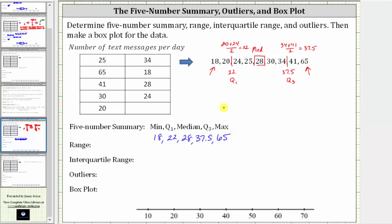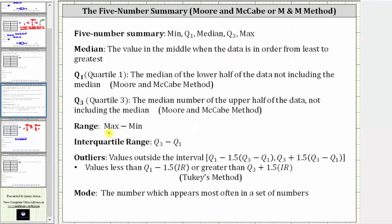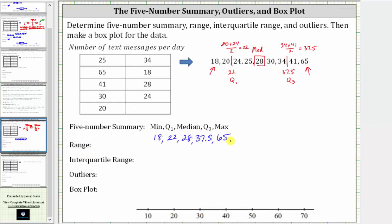Now let's determine the range and interquartile range. The range is the maximum minus the minimum, and the interquartile range is quartile three minus quartile one. So the range is 65 minus 18, which is equal to 47. The interquartile range is Q3 minus Q1, which is 37.5 minus 22, which is equal to 15.5.